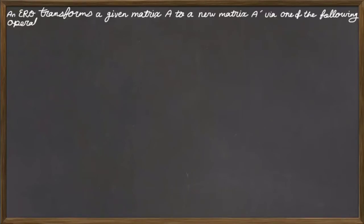What is an elementary row operation? According to definition, an elementary row operation, or in short ERO, transforms a given matrix A to a new matrix A'